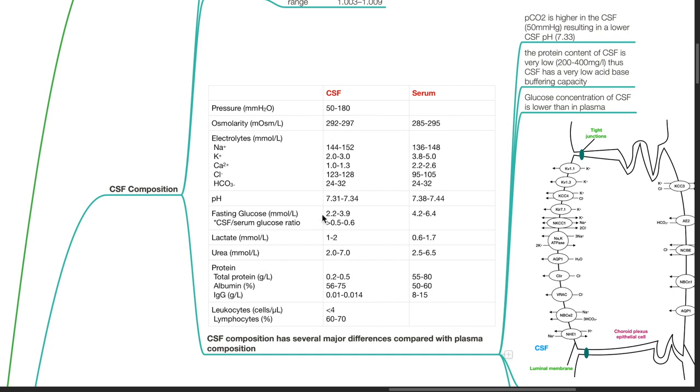CSF total protein is 0.2 to 0.5 grams per liter, while serum total protein is 55 to 80 grams per liter.